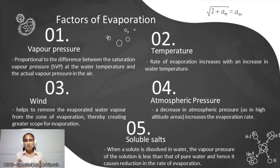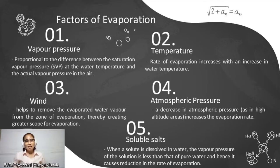Fourth is atmospheric pressure. A decrease in atmospheric pressure, as in high altitude areas, increases the evaporation rate — they are inversely proportional. The last factor is soluble salts. The percentage reduction in evaporation rate approximately corresponds to the percentage increase in specific gravity under identical conditions. Evaporation from seawater is about 2 to 3 percent less than that from freshwater.